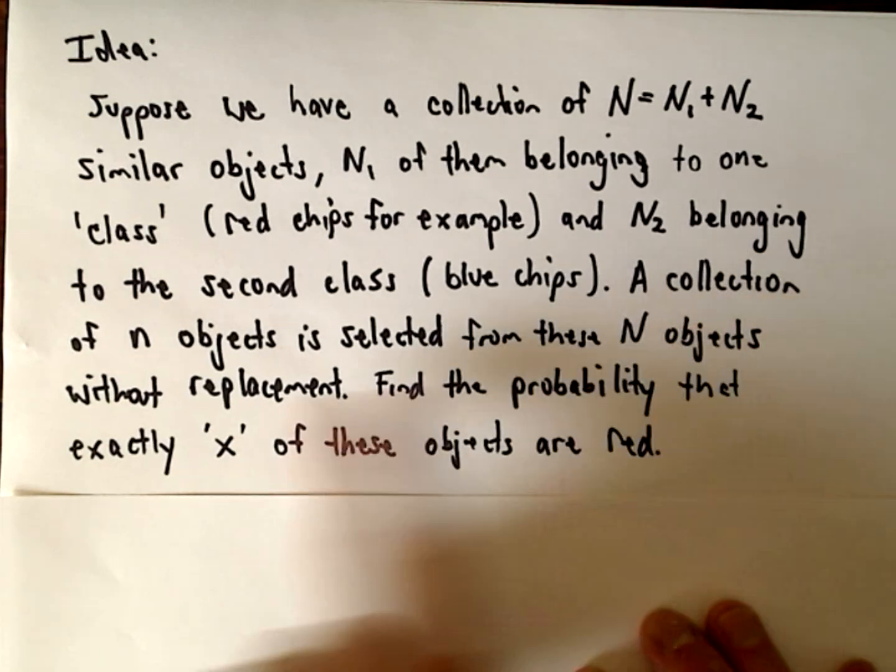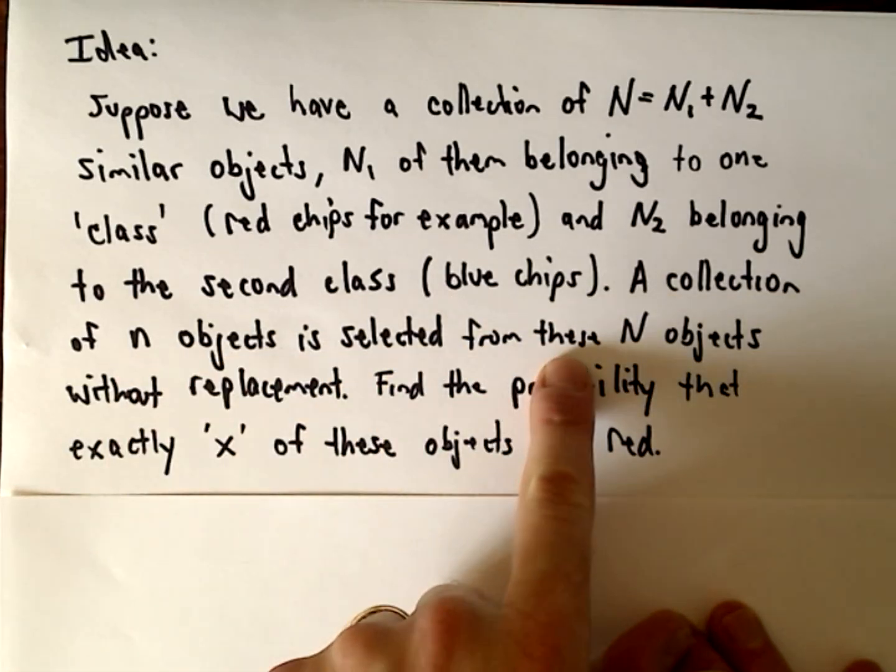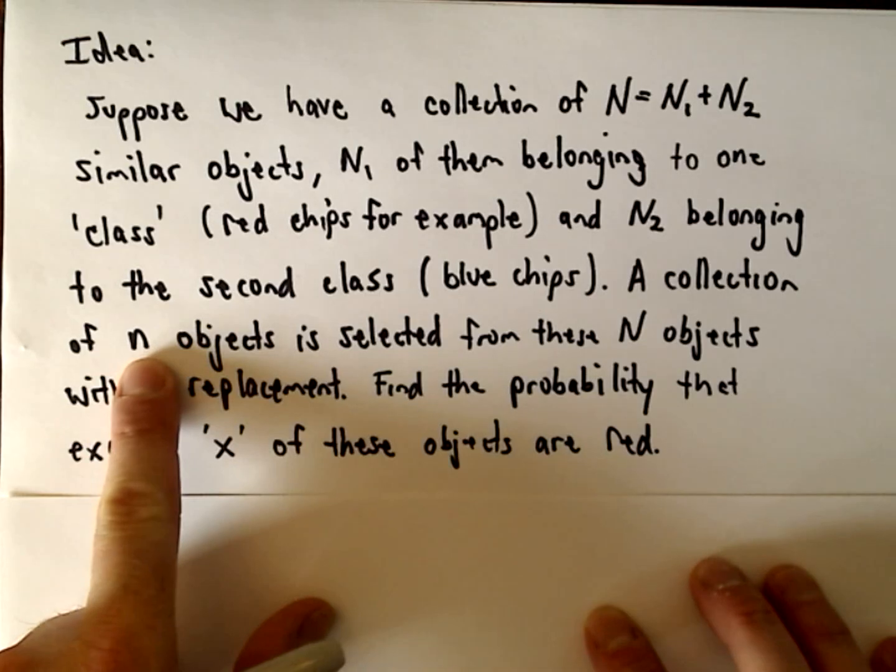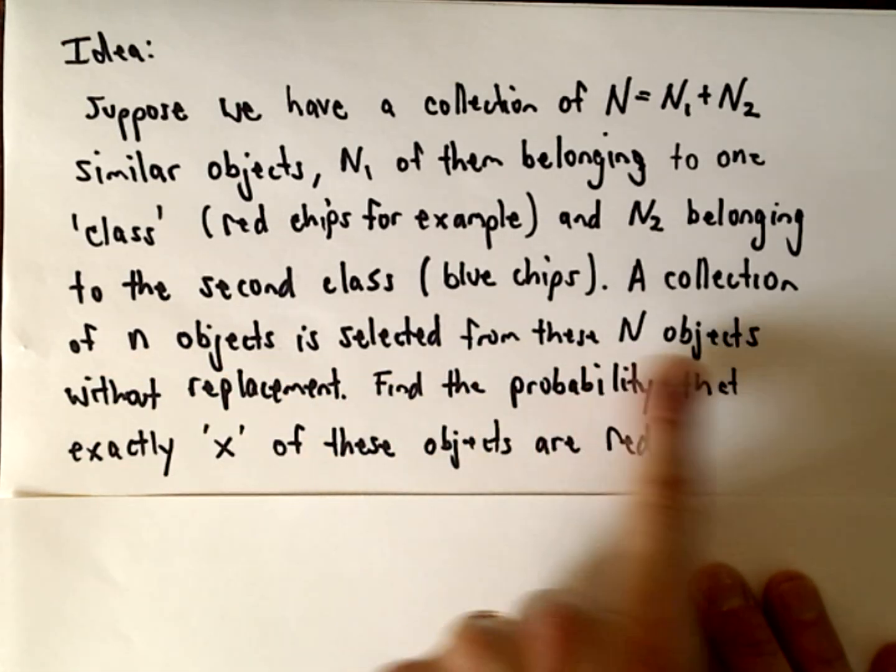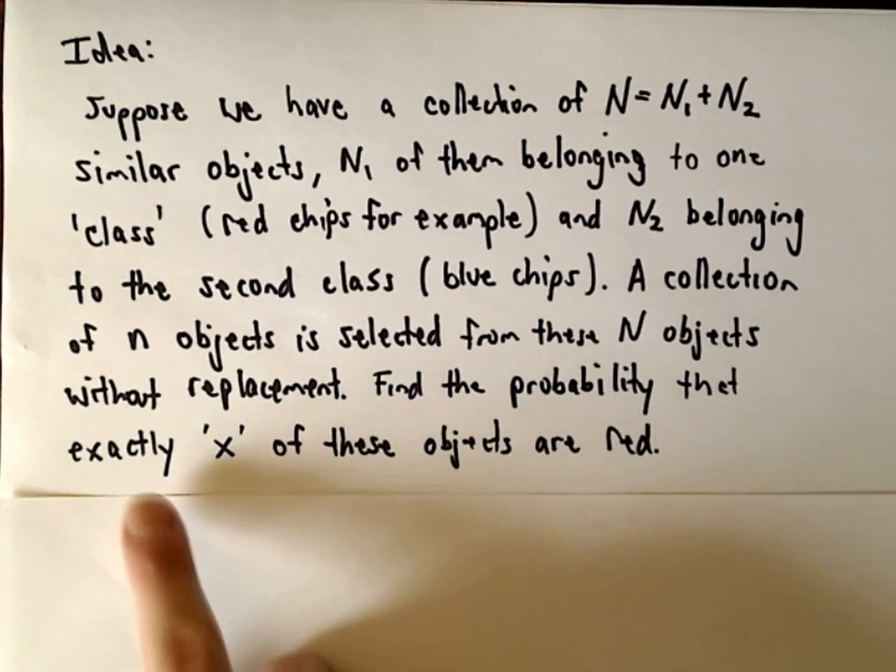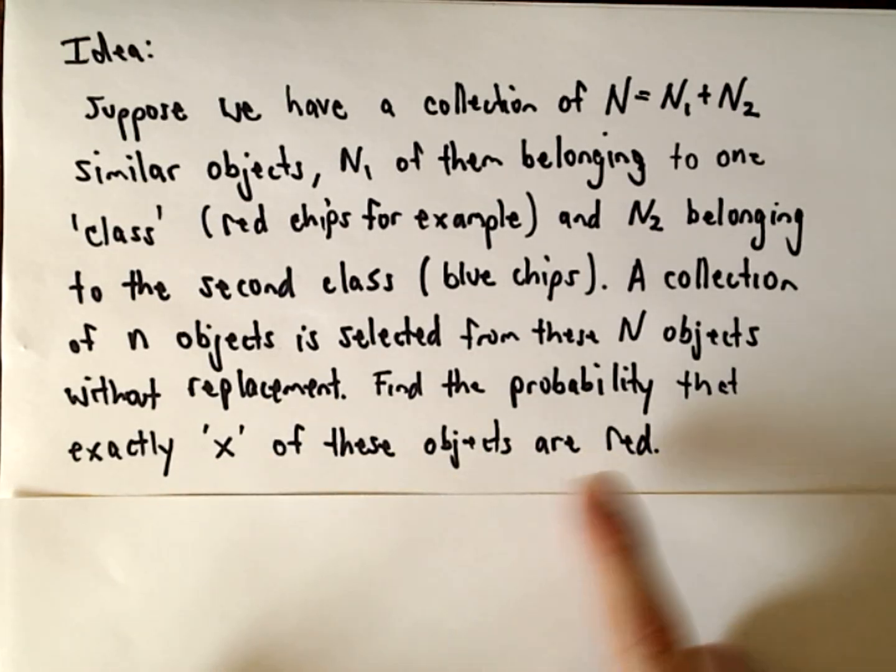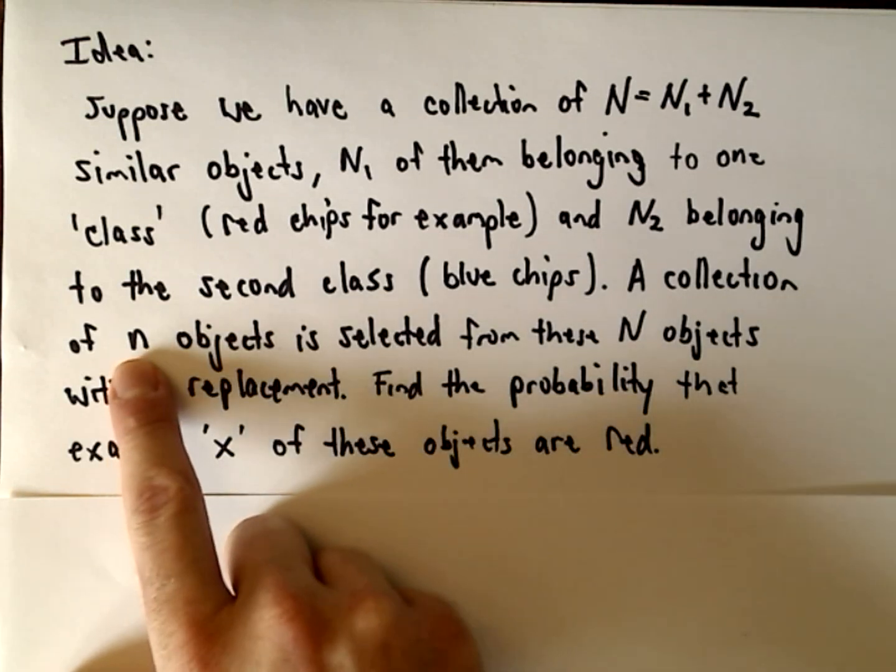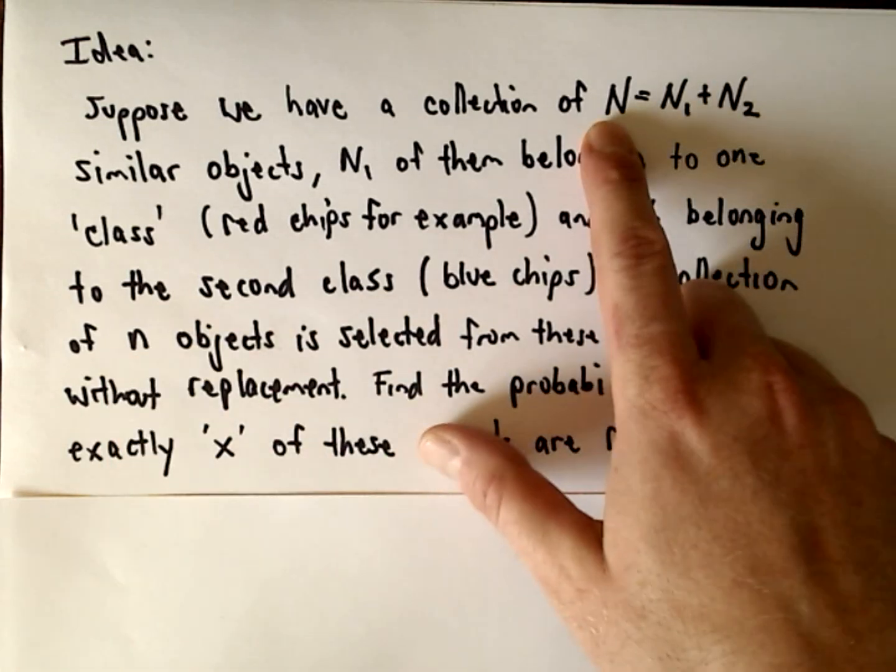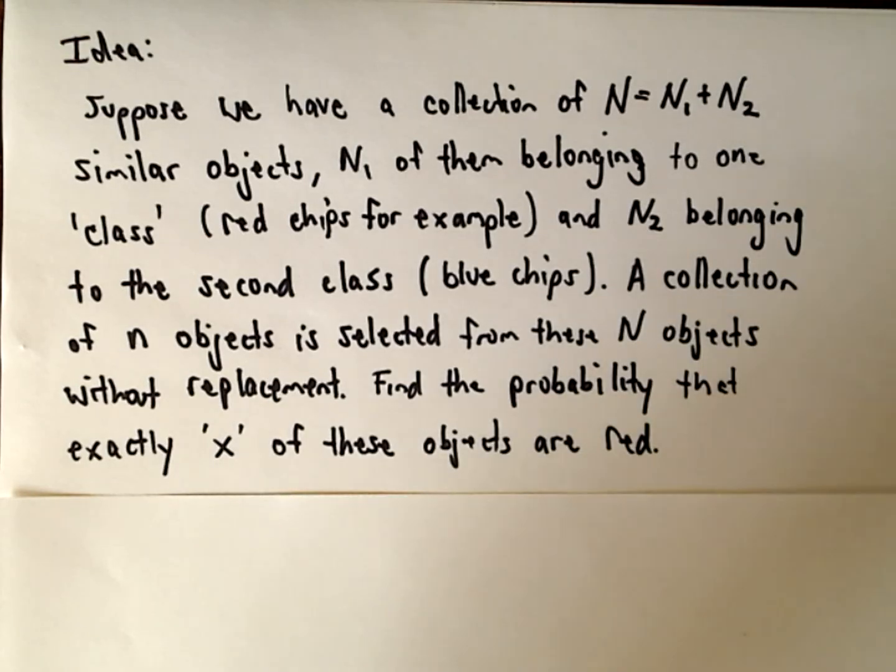So we're going to take a collection of small n objects and select from them. A collection of small n objects is selected from these capital N objects without replacement. We want to find the probability that exactly x of these objects are red.